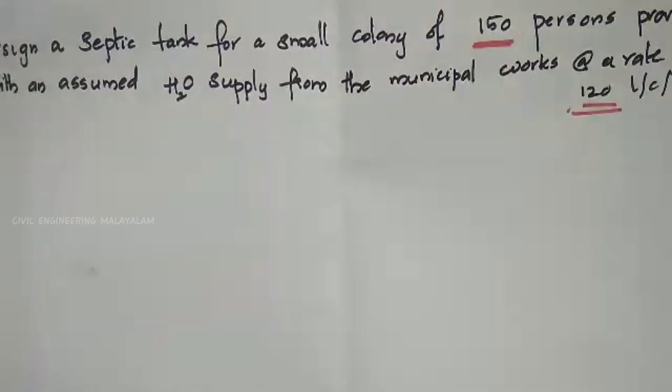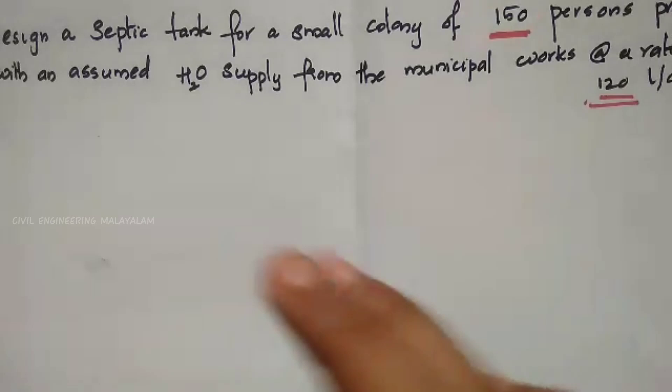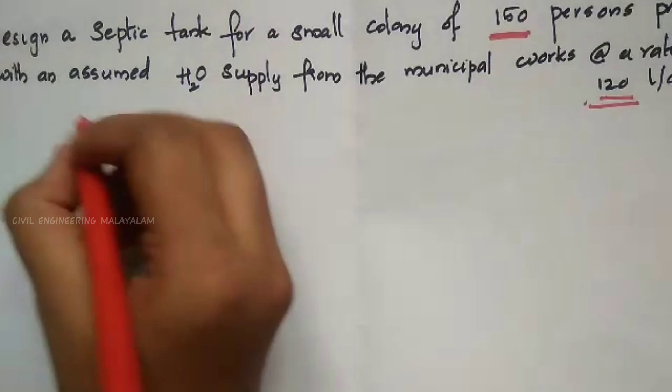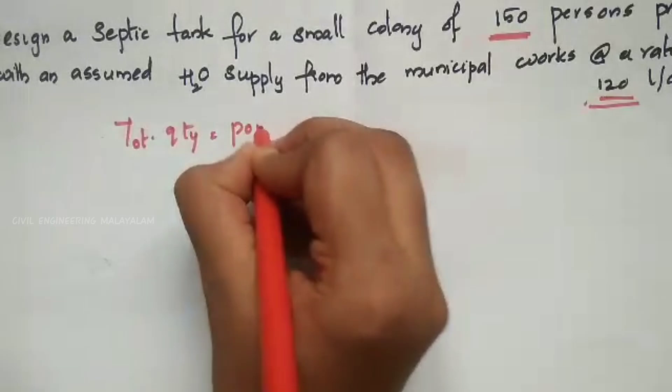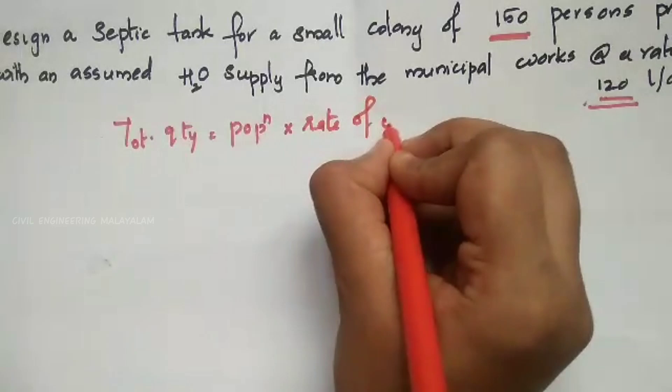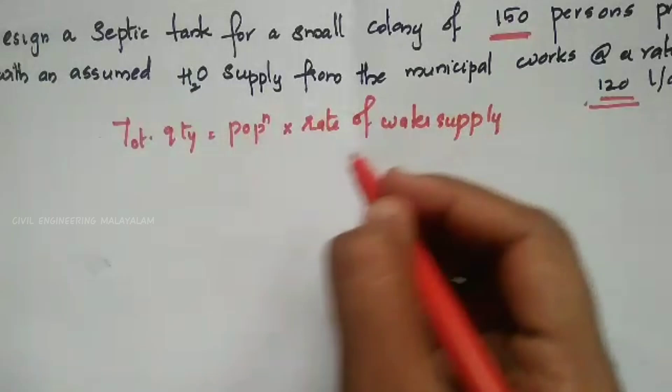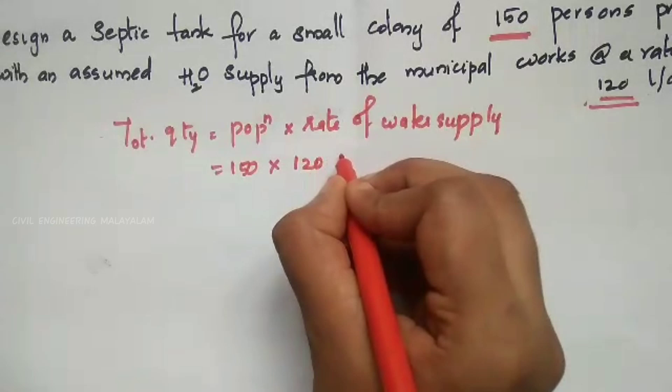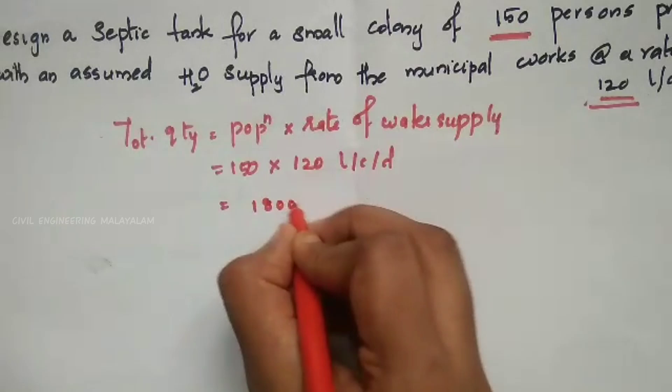The first step is to calculate the total quantity. Total quantity equals population multiplied by rate of water supply. Population is 150, rate of water supply is 120 litres per capita per day. So total quantity equals 18,000 litres per day.